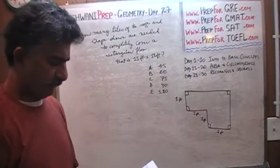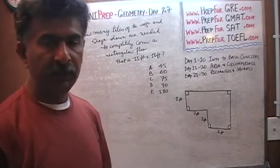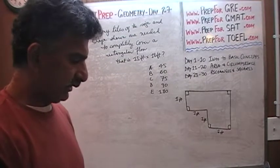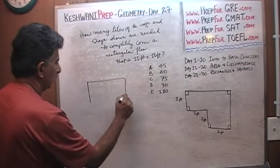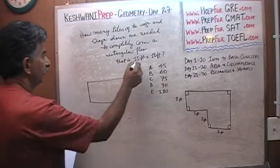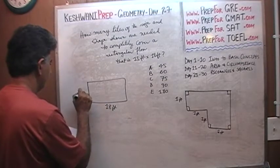That's the shape of the tile that is shown to us. The question simply is how many of these tiles are going to be needed if this is the shape of the tiles? How many are needed to cover a rectangular floor which is 15 feet by 18 feet?